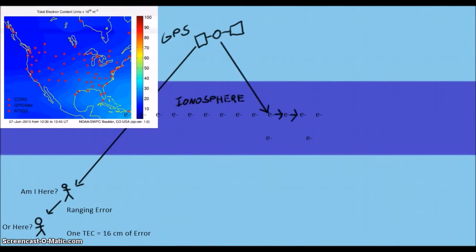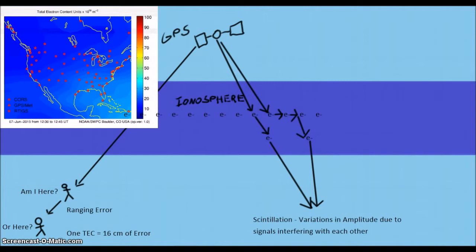Two, the signal can be scattered by the electrons, creating patterns of constructive and destructive amplitude interference, which causes noise and interferes with the signal lock. This phenomenon is known as scintillation.